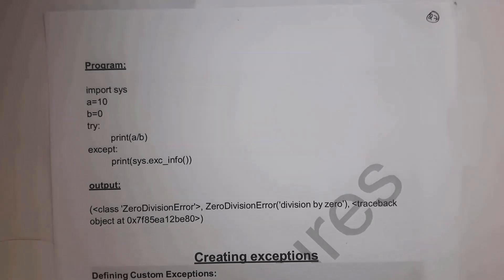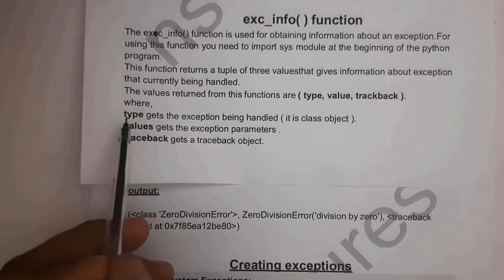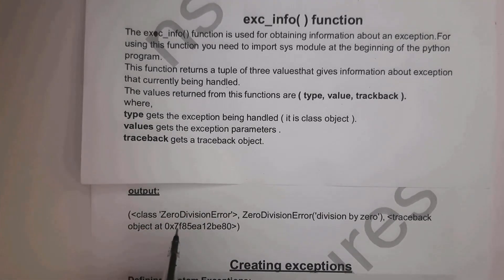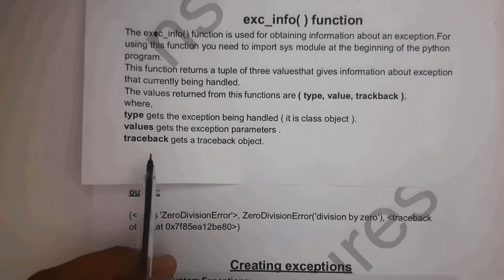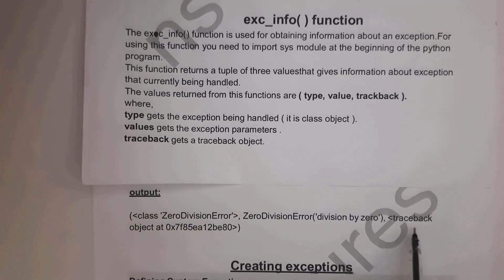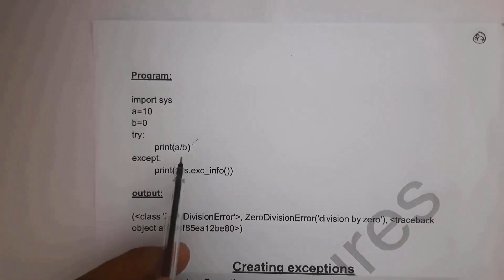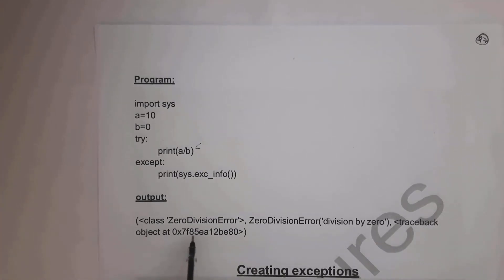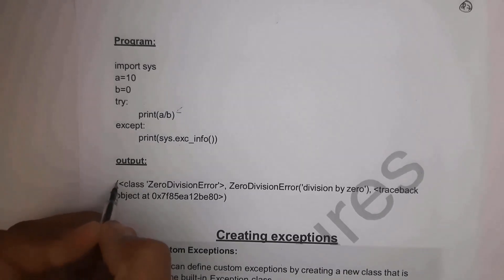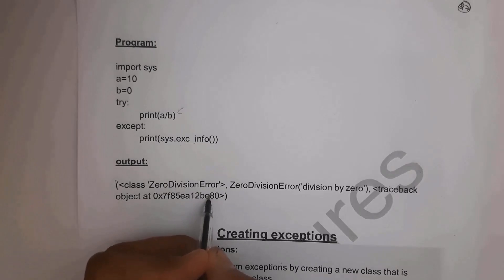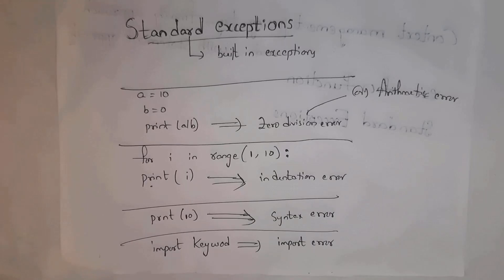The exc_info function displays output as a tuple in normal brackets with three values. The first value is type — a class object — so you get 'class ZeroDivisionError'. The second is value, which gives the exception parameter: 'ZeroDivisionError: division by zero'. The third is traceback, which gets a traceback object displaying the address where the exception occurred — for example, 'traceback object at 0x7...'. This is how exc_info provides information about exceptions.